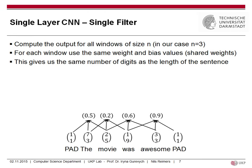We apply the same operation to every word in the sentence. For a four-word sentence, we get four output values — for example, 0.5, 0.2, 0.6, and 0.9 for 'the', 'movie', 'was', and 'awesome' as target words. The window size here is three. You can also choose window size one (only the target word) or five (two words to the left and right). Importantly, all these outputs are computed with the same weight matrix W and bias vector.